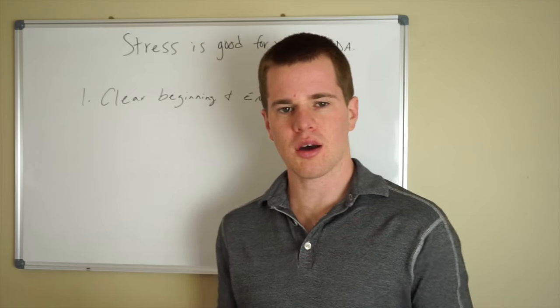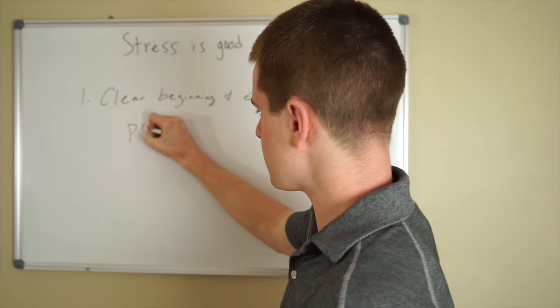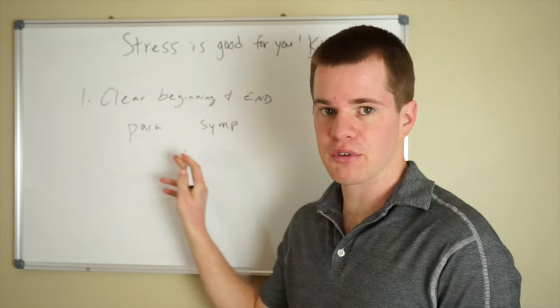So your autonomic nervous system has two branches. You have your parasympathetic and then you have your sympathetic.